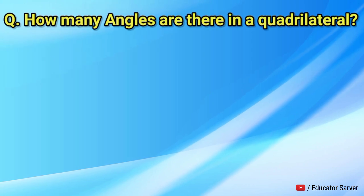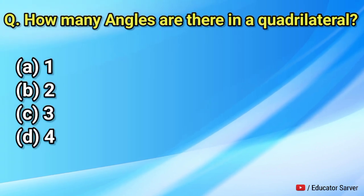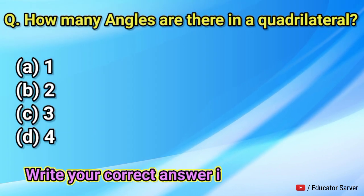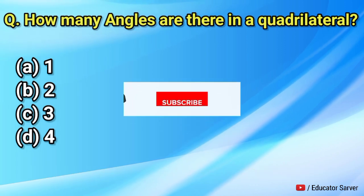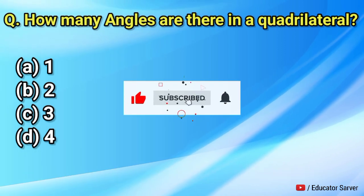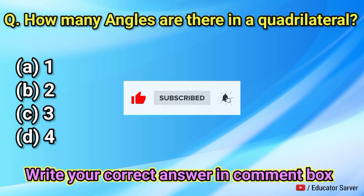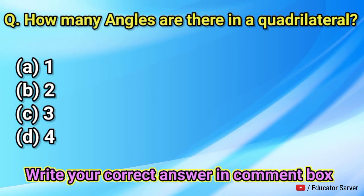How many angles are there in a quadrilateral? Options are one, two, three, and four. Comment your right answer in the comment box. Thank you for watching.